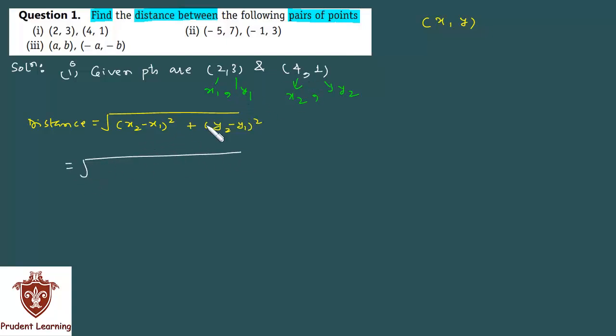In place of x2, you will put 4 minus x1 which is 2, square the whole thing. Plus y2 which is 1 minus y1 which is 3, again square this as well.